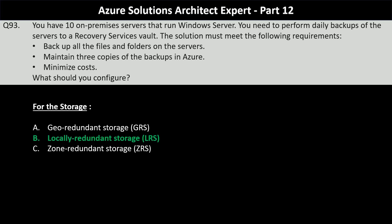The other options are incorrect: geo-redundant storage provides geographic redundancy by copying data to a secondary region, which is unnecessary here and will increase costs by maintaining a total of six copies. Zone-redundant storage ensures redundancy across multiple availability zones in a single region but is costlier than LRS, making it an incorrect choice in this use case.